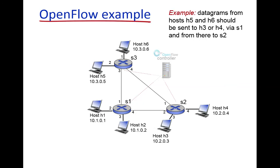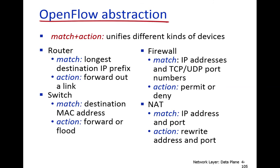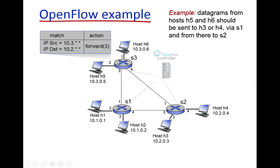We are going to discuss an OpenFlow example. We have discussed OpenFlow match-action examples from a general point of view, covering the data plane in SDN and how the forwarding flow table is built up at each switch. Now we will discuss it through an example. Suppose we have this network topology, and this is the SDN controller. The switches are using the OpenFlow protocol for communication, so we call it an OpenFlow control.